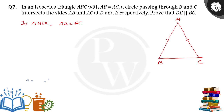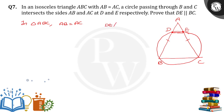Now there is a circle passing through B and C which intersects AB and AC at points D and E. Let's suppose there is a circle passing like this — that circle is touching AB at point D and AC at point E. Now if we join them by using a line, we need to show that DE is parallel to BC.